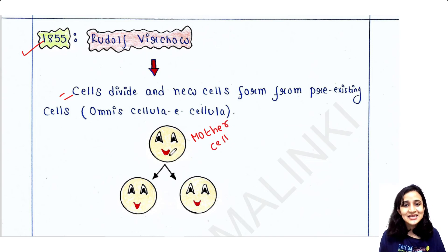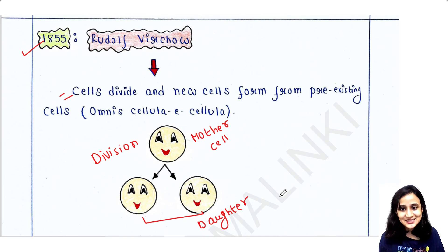And this cell is dividing to generate two daughter cells. So all cells generate from the mother cell or pre-existing cells. He said omnis cellula e cellula. That means cells generate from pre-existing cells.